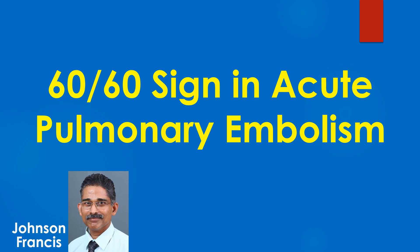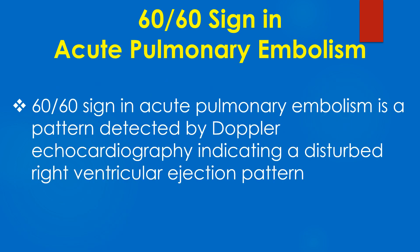The 60 by 60 sign on Doppler echocardiography in acute pulmonary embolism is a pattern indicating a disturbed right ventricular ejection pattern.